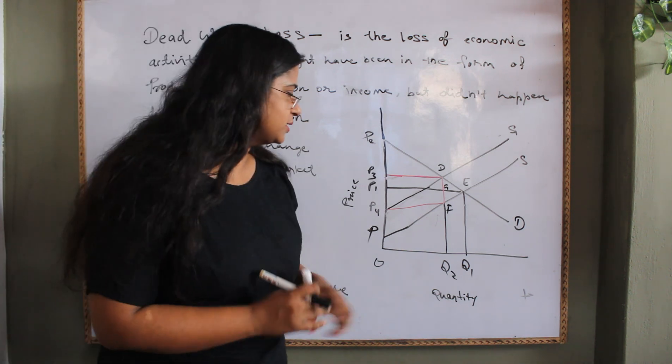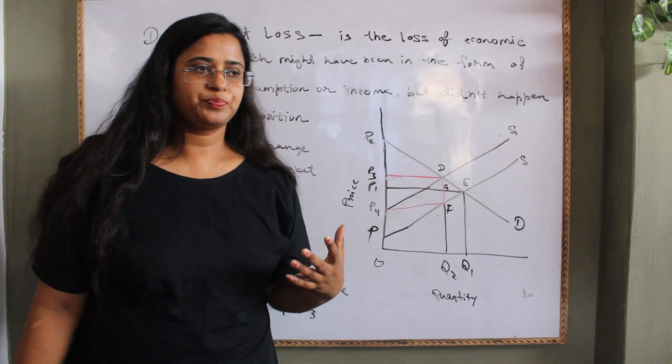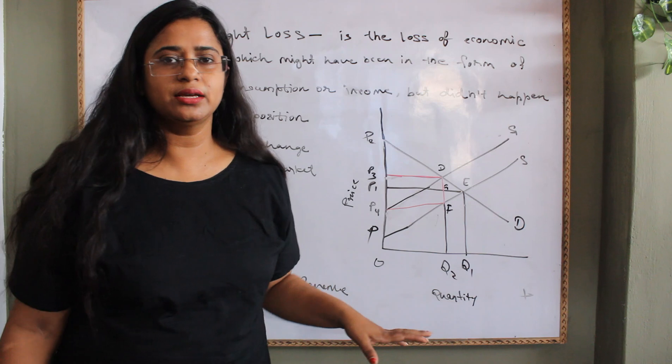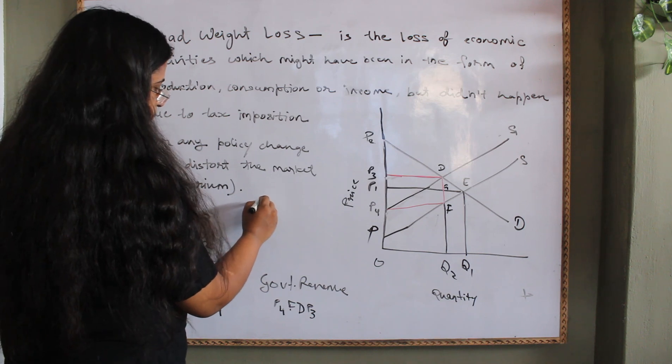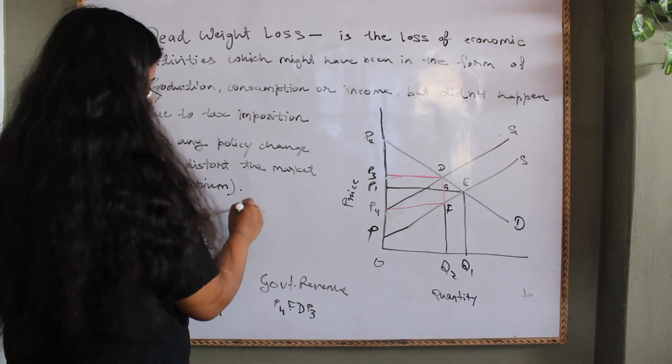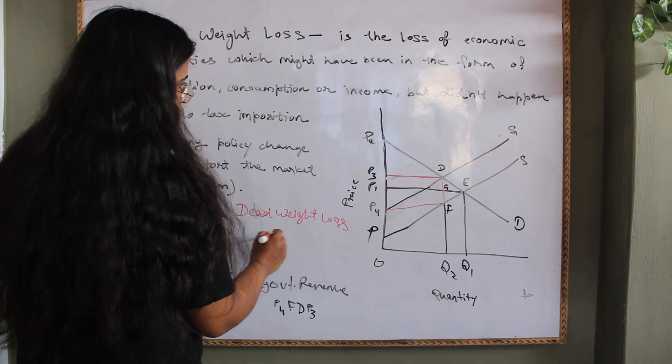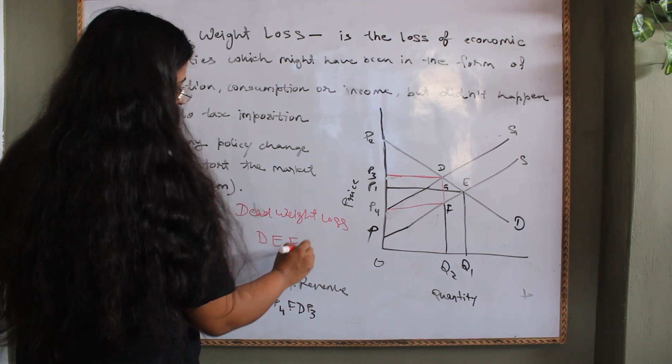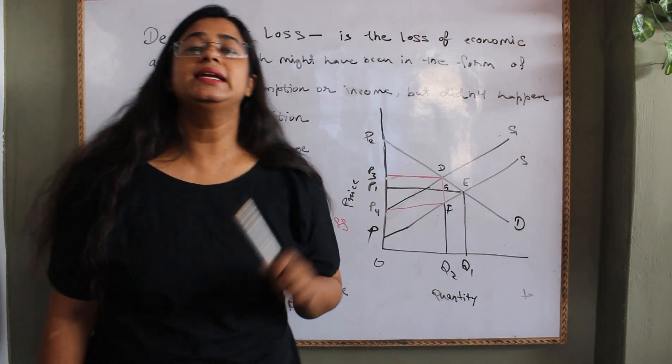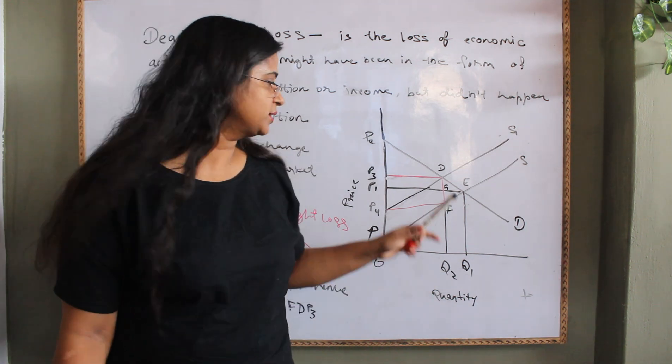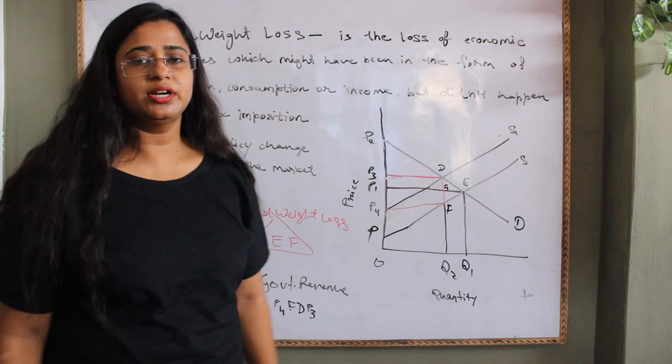Here is a certain area or you can see a triangle which has not been converted to anything after taxation. The area is DEF, this triangle. This DEF is the deadweight loss due to taxation. It is not going to anywhere or this area has not been converted into anything.